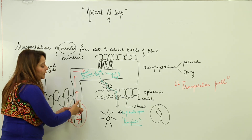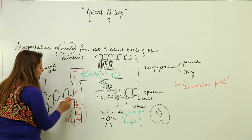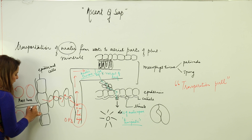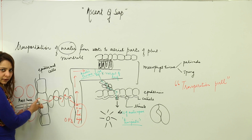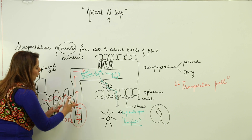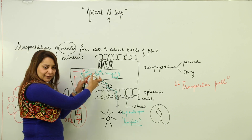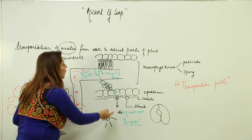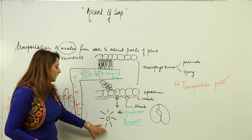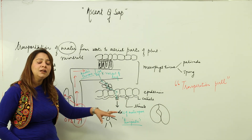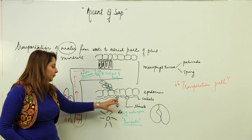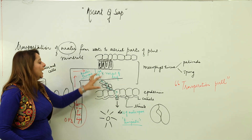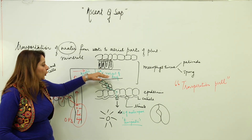As water moves from the root xylem to the leaf, the water pressure in the xylem vessel of the root also falls. Because the pressure is now low there, it withdraws water from the cortex cells, and the cortex cells withdraw water from the underlying cells — finally drawing water from the soil, through the epidermis, through the cortex, into the root xylem vessel.